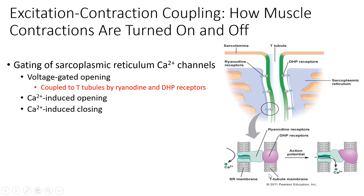The ryanodine receptor is not only a receptor but also a calcium channel. When the action potential arrives, it couples to the opening of that calcium channel, bringing calcium from the stored region in the SR out into the cytosol where it contacts actin and starts turning on muscle contraction. This is how these two proteins are involved in the regulation of this process.